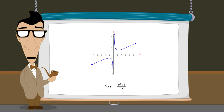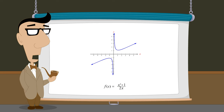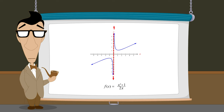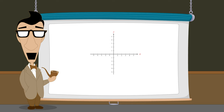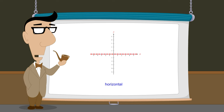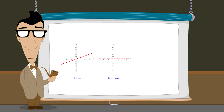Unlike vertical asymptotes, which occur at x-values where the function's denominator approaches zero, causing the function's value to grow without bounds in the positive or negative direction, non-vertical asymptotes occur when, as x takes on increasingly large positive or negative values, the graph's distance to the asymptote becomes increasingly small. Non-vertical asymptotes can be horizontal, oblique, or curvilinear.